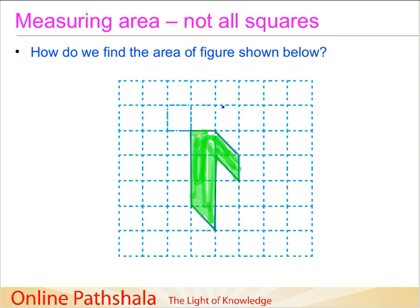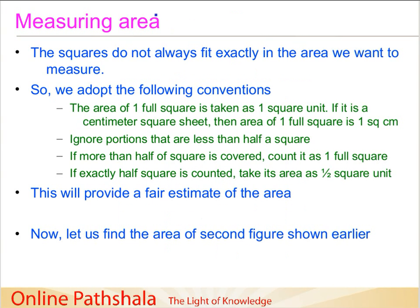We can just see the number of squares — this is one square over here, two squares and three squares. But then we have some squares which are not full squares, like these shaded portions. So how do we tackle this? We have come up with some conventions.